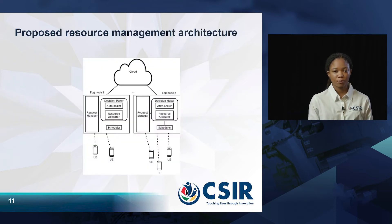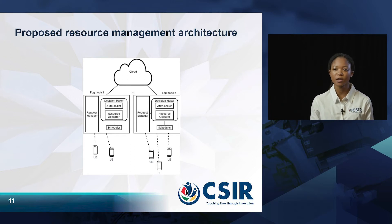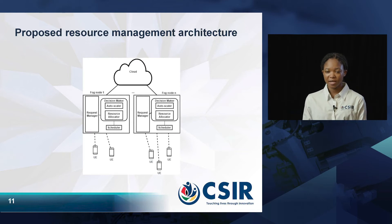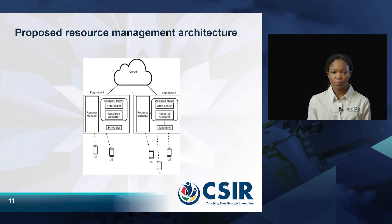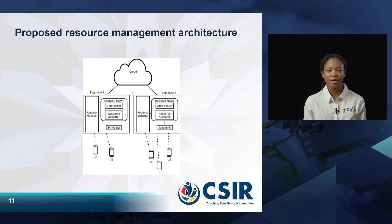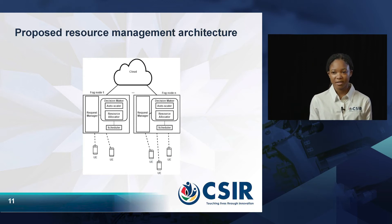This is our proposed resource allocation framework. We can see the architecture of fog nodes in the framework. The request manager handles all incoming requests and forwards them to the decision maker, which keeps track of all available computing resources — in our case, the number of CPU cores. It then makes a decision on whether to allocate or de-allocate these resources by implementing the reactive auto-scaling algorithm.